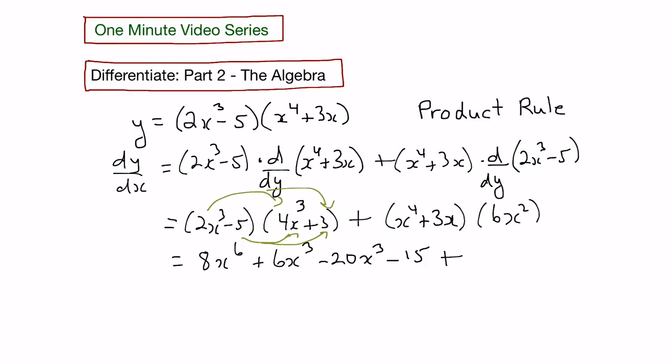Plus, we'd get 6x squared times 3x which would give us 18x cubed. And finally, 6x squared times x to the fourth which would give us 6x to the sixth.